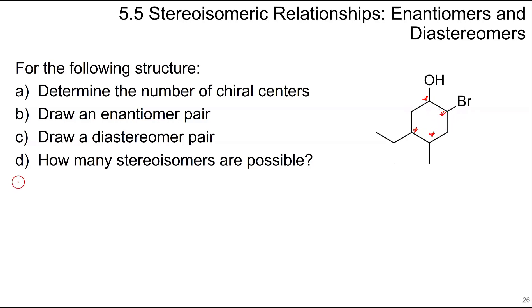For B, we're going to draw an enantiomer pair. You can just give any stereochemistry here. I'm just going to do all of them wedged. And for the enantiomer, then they all will be dashed.